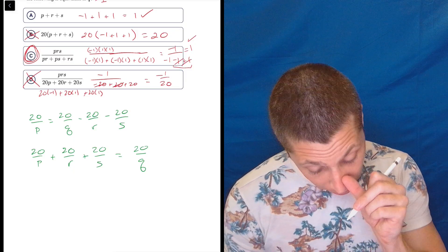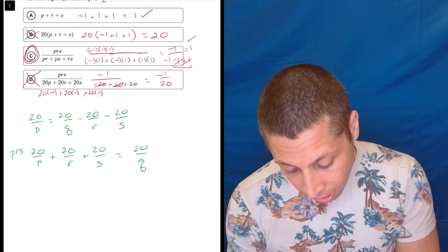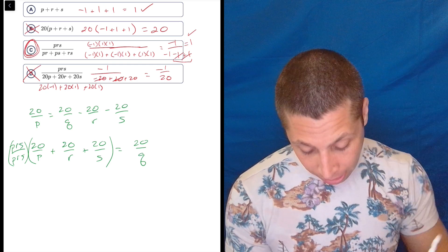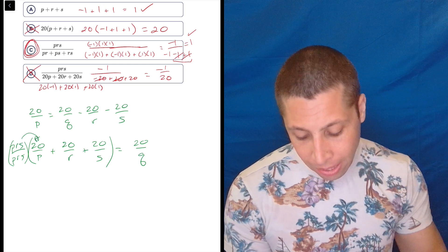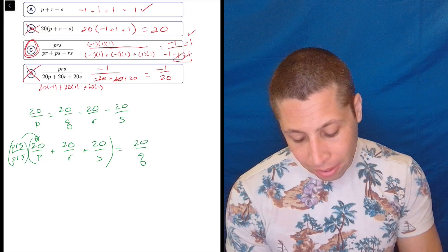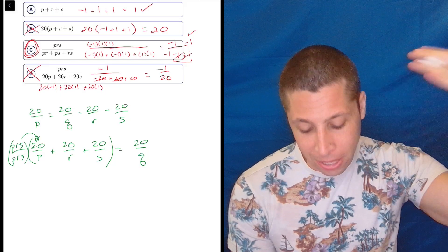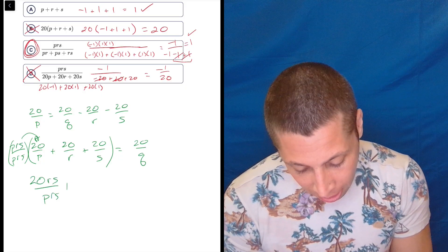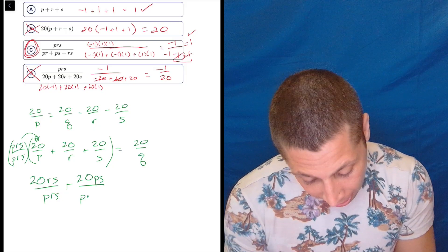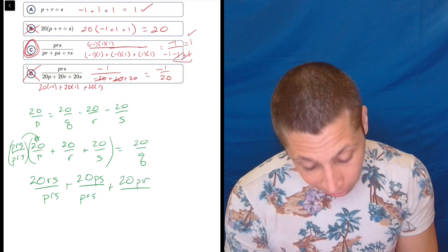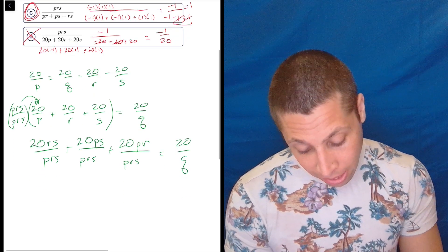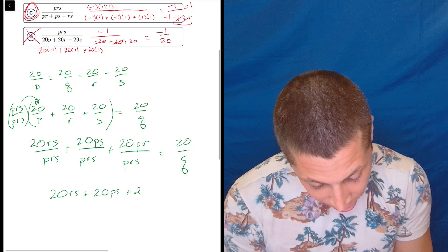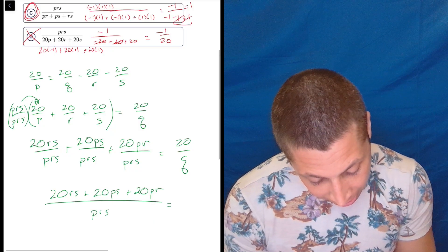So now we have to multiply everything by the common denominator, which is PRS over PRS. So we're multiplying by RS for that first one. See, this is confusing. I don't like this method. So 20RS over PRS plus 20PS over PRS plus 20PR over PRS equals 20 over Q. Now that these are all like terms, the same denominator, I can add them. So 20RS plus 20PS plus 20PR over PRS is equal to 20 over Q.